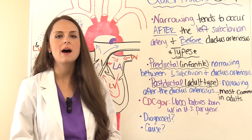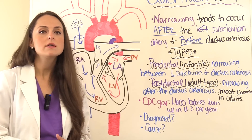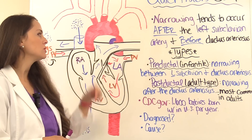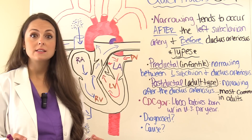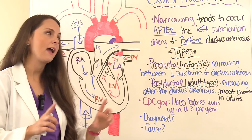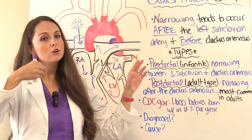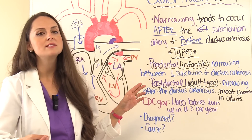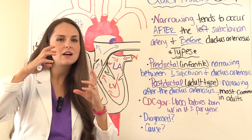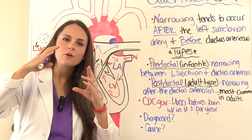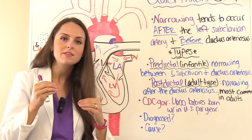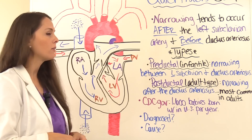What causes this condition? They think it's caused by tissue making up the ductus arteriosus extending into the aorta. So whenever that structure naturally goes to close after birth, because that tissue has also embedded itself in the aorta, when it closes it takes some of the aorta with it and causes it to become narrowed.